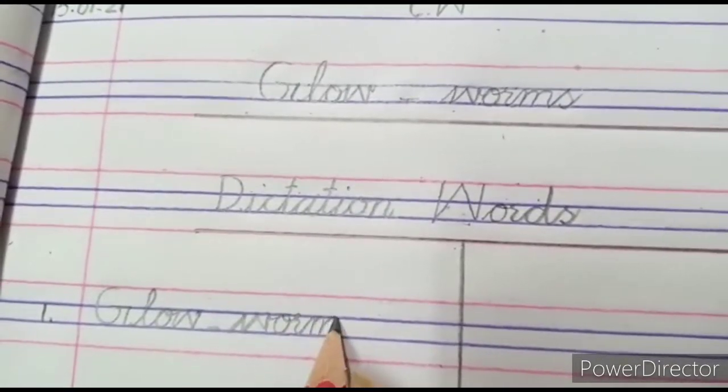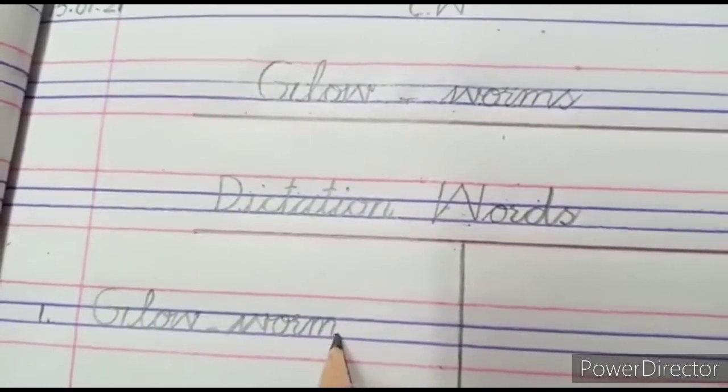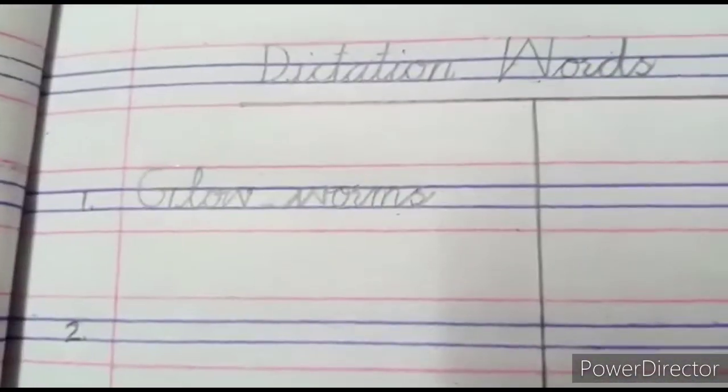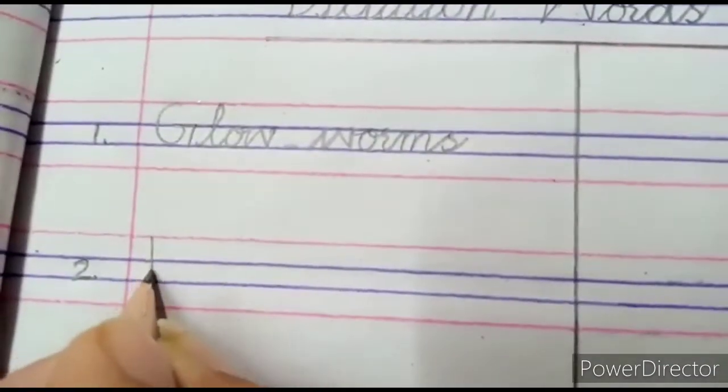G-L-O-W Glow W-O-R-M-S Glow Worms. Our second word is Dozens. D-O-Z-E-N-S Dozens.